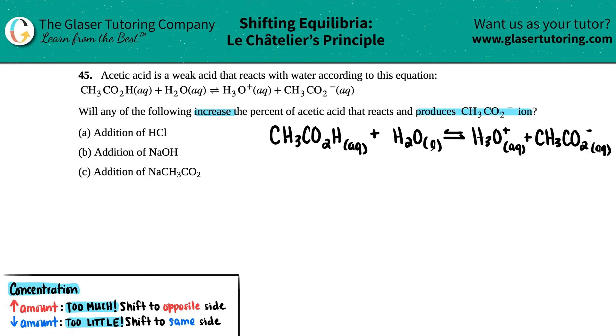The question asks: will any of these increase the percent of acetic acid that reacts and produces the acetate ion? So we need to decide - are we going in the forward or reverse direction? To increase the percent of acetic acid that produces acetate, we're starting with acetic acid and producing acetate. That means we want to go in the forward direction. Now let's look at these three different instances to see if they go forward or reverse.